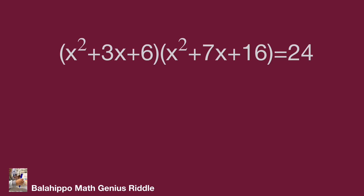The question: quantity x squared plus 3x plus 6, multiplied by quantity x squared plus 7x plus 16, equals 24. In the regular approach, we can expand these two quantities, then try to factorize the new quantity. We may get the answer, but it is possible it will take significant effort.